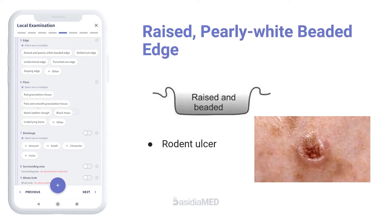A raised, pearly white beaded type of edge develops in invasive cellular disease and becomes necrotic at the center. Beads are pearly white in color and are due to actively multiplying malignant cells. In between these beads are predominantly the dormant and active cells. This type of edge is characteristic of basal cell carcinoma or rodent ulcers.